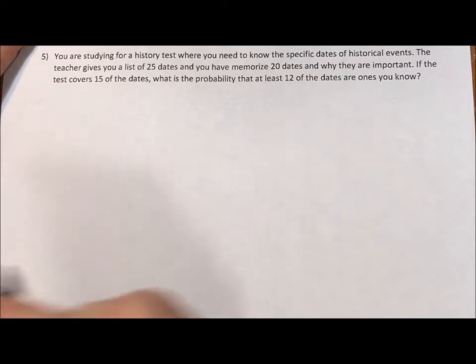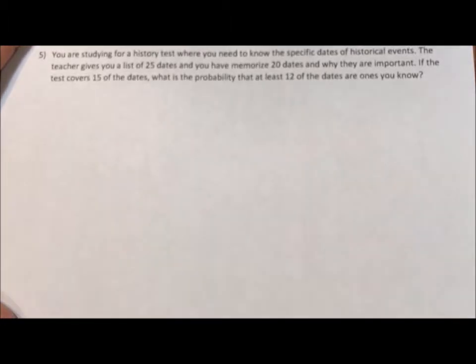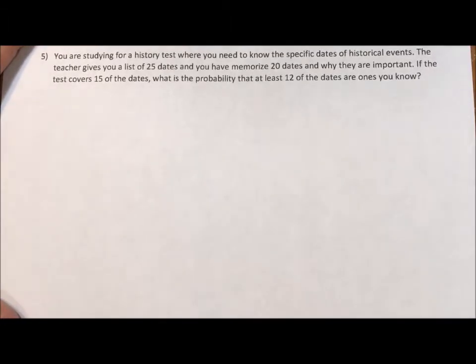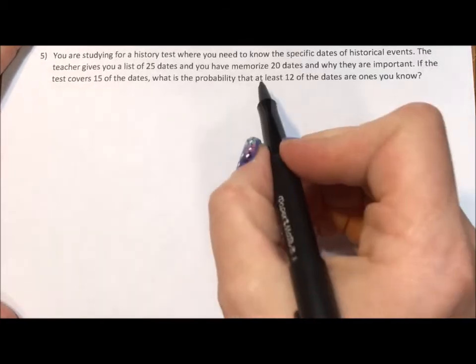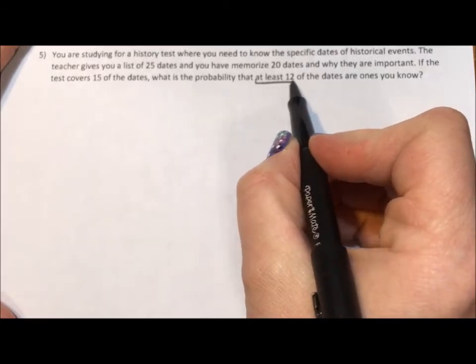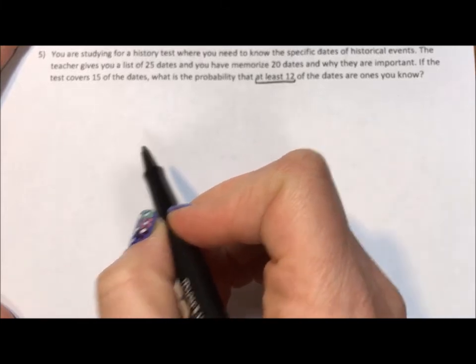Okay, so when we had at least one, we could just subtract from the total because at least one is everything but none. Here it's a little bit different. This says at least 12, which means if it was exactly 12,